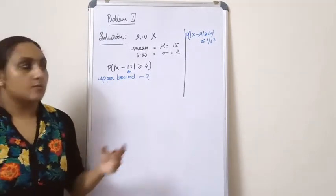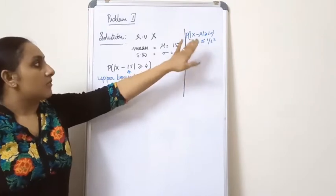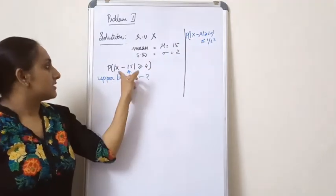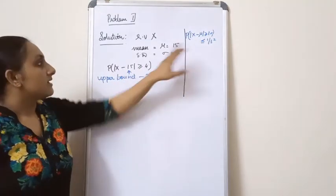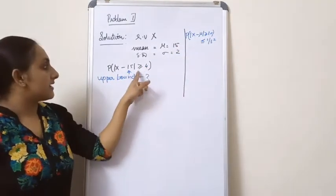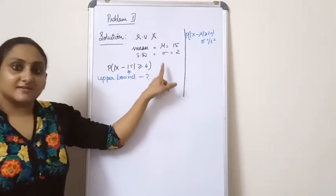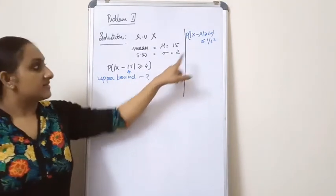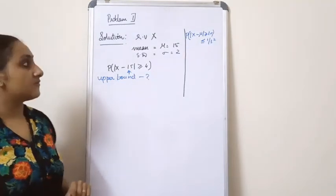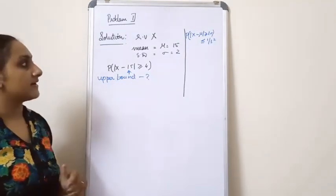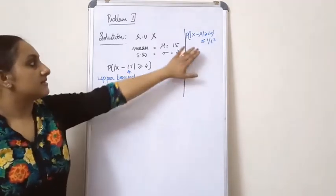You know what Chebyshev's inequality is. It states: probability of |X minus mu| greater than or equal to T·sigma. Please keep in mind the 'greater than or equal to' form. You have to find out the upper bound, which is less than or equal to 1 by T squared. The missing thing is T in this inequality.